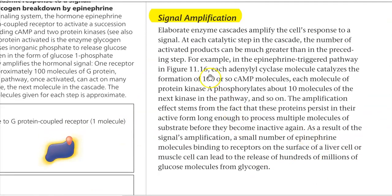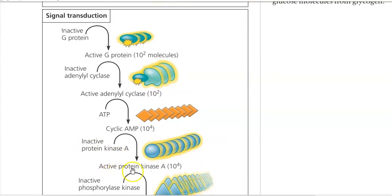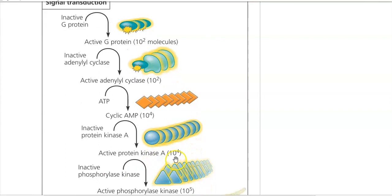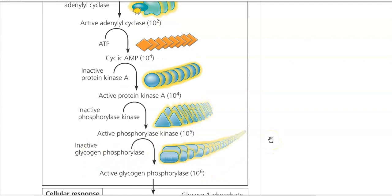So, if you look at the explanation here, epinephrine triggered pathway in each adenylyl cyclase molecule catalyzes the formation of 100 or so cyclic AMP, that is the second messengers, each molecule of the protein kinase A phosphorylate in turn 10 more molecules there in the next kinase pathway. So, for example, the here, inactive protein kinase A can be converted into active protein kinase, which in turn phosphorylates the other kinases there in the pathway. It further activates other kinase.